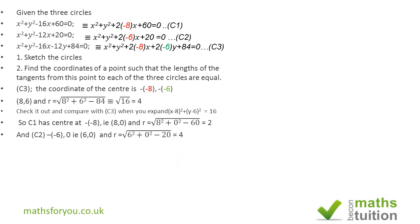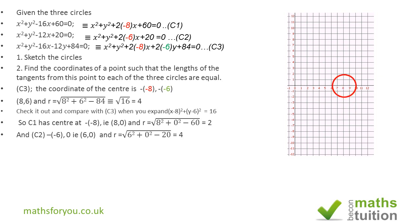Now to sketch the circles using their centers and radii: C1 has center (8, 0) and radius 2, C2 has center (6, 0) and radius 4, and C3 has center (8, 6) and radius 4. In the actual question, identifying the significant points (10, 0) and (8, 2) each earns a mark, as they will be important shortly.